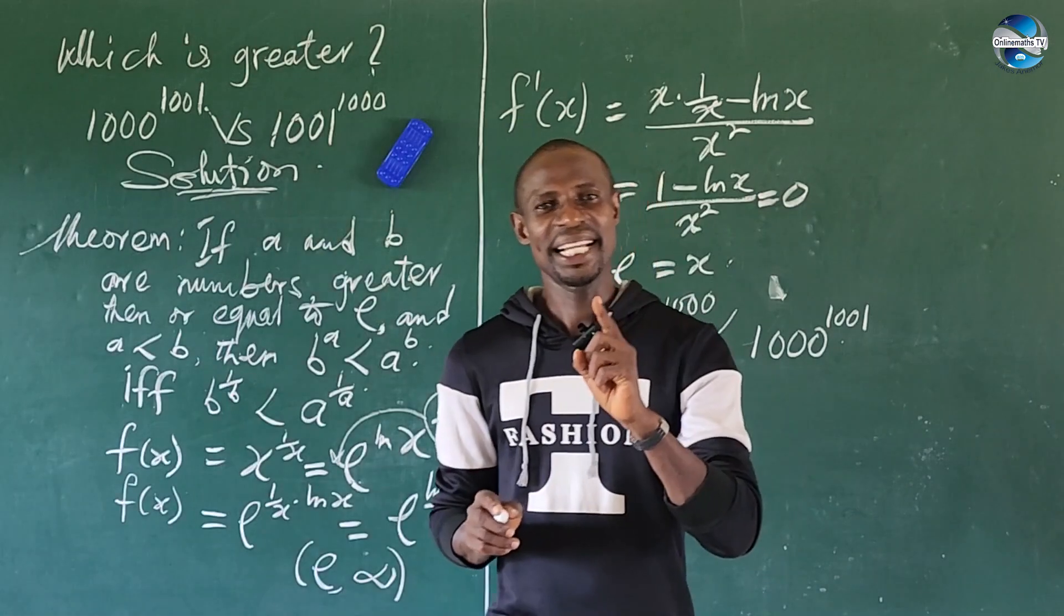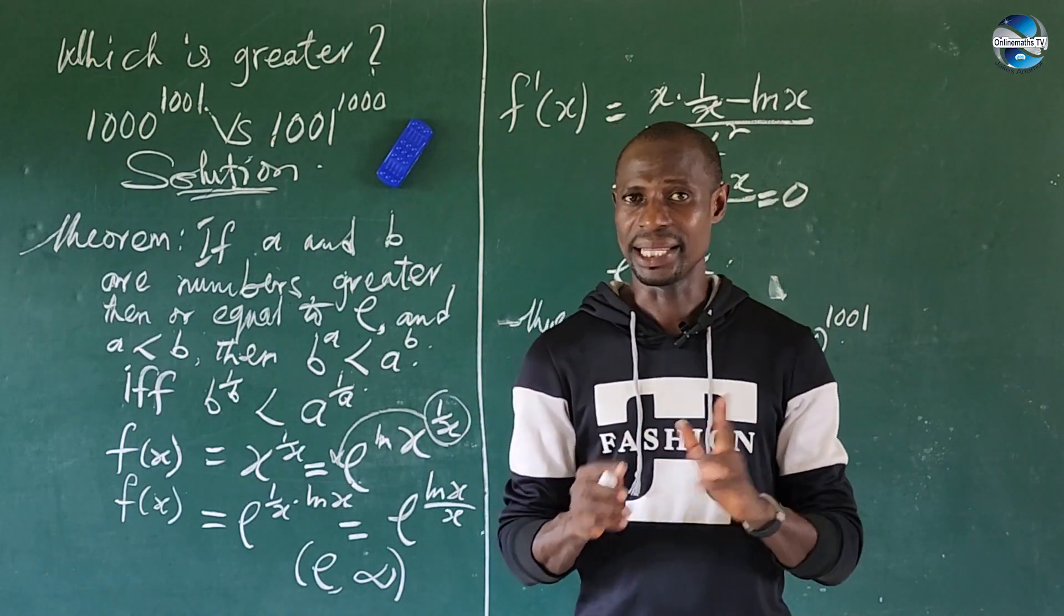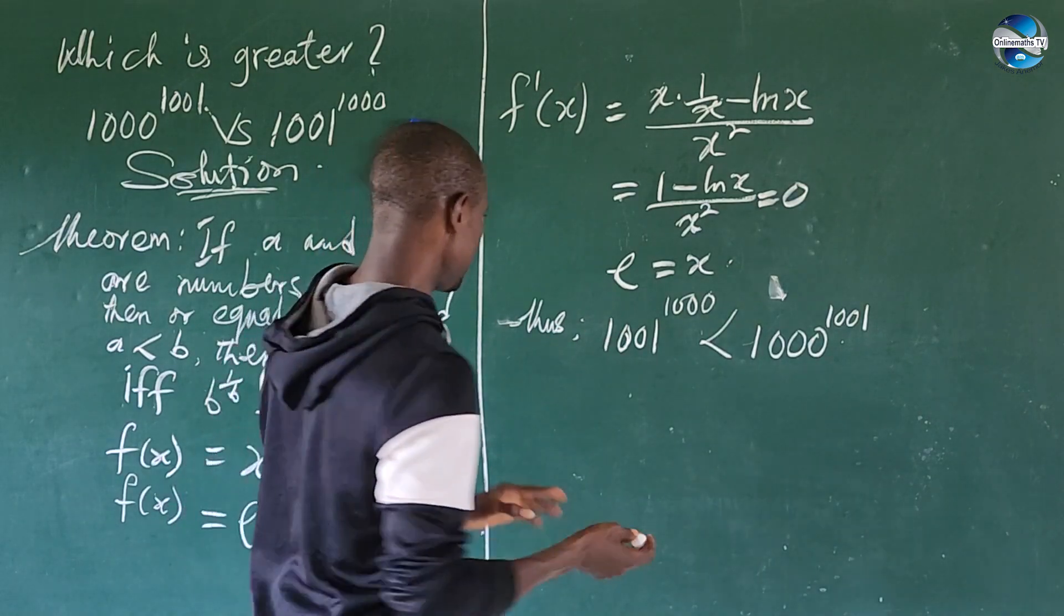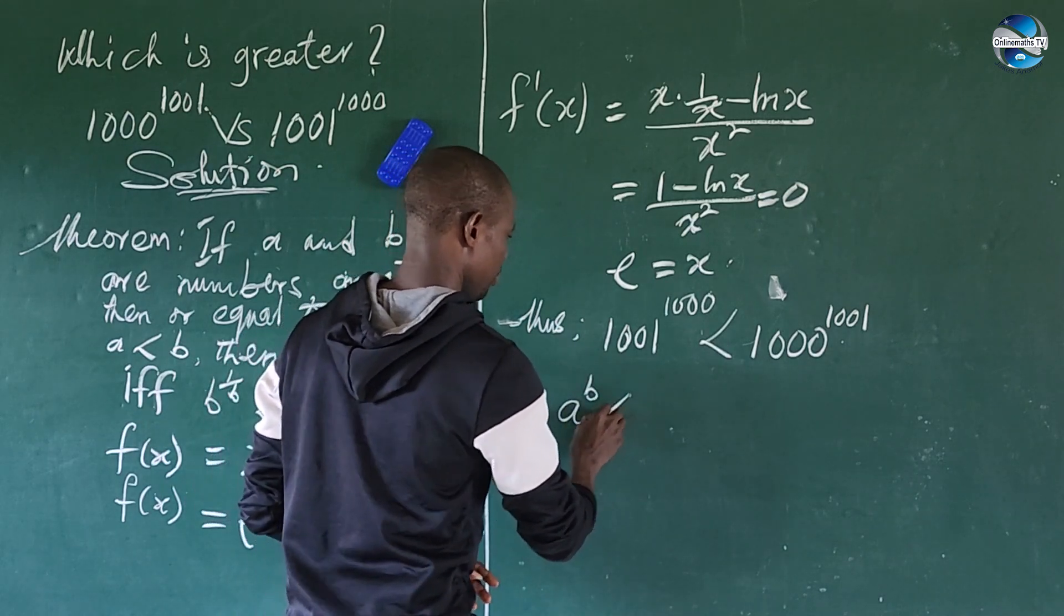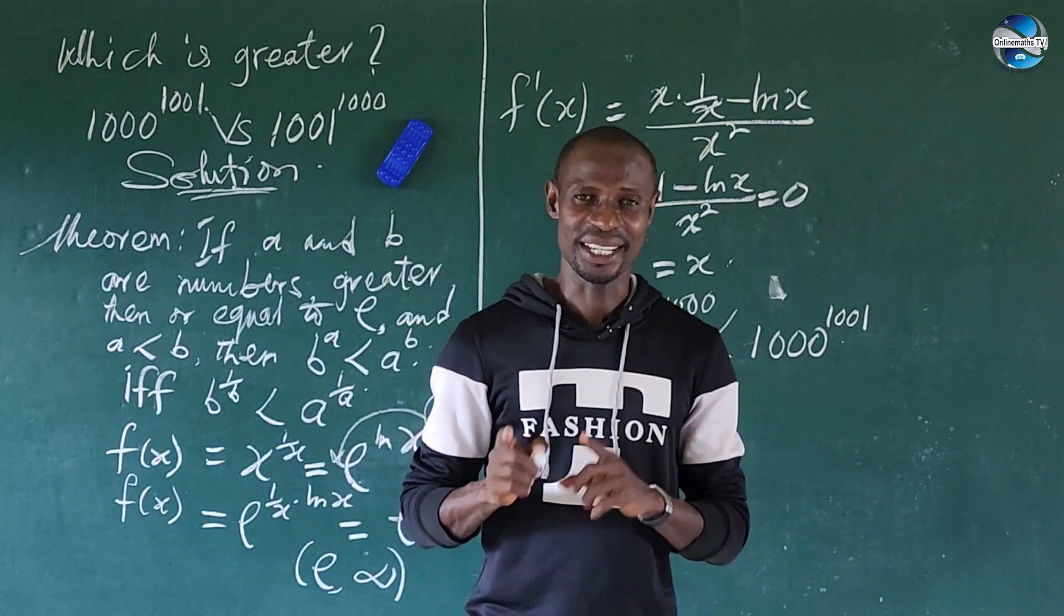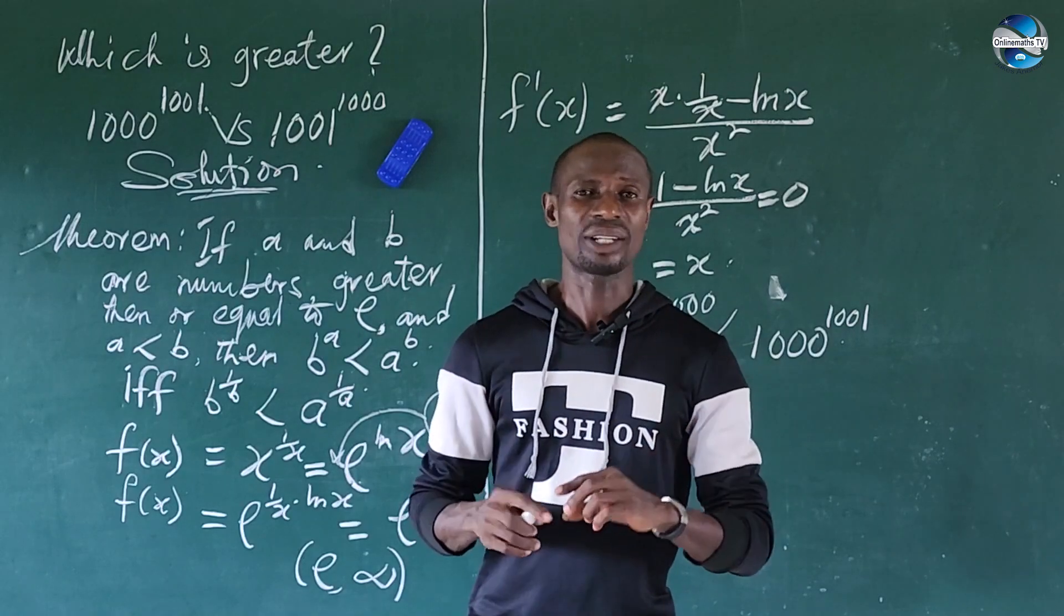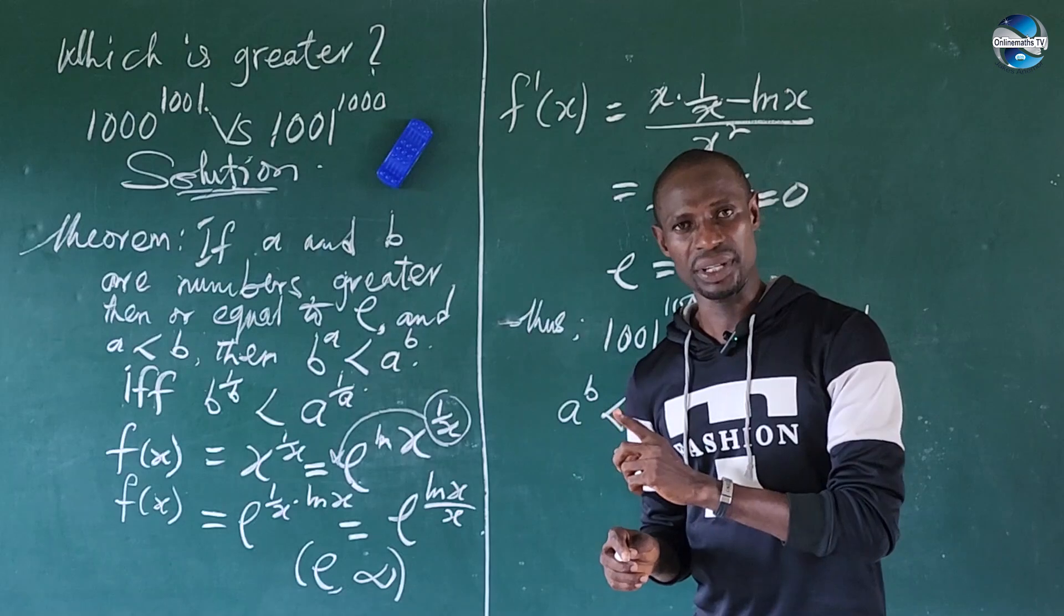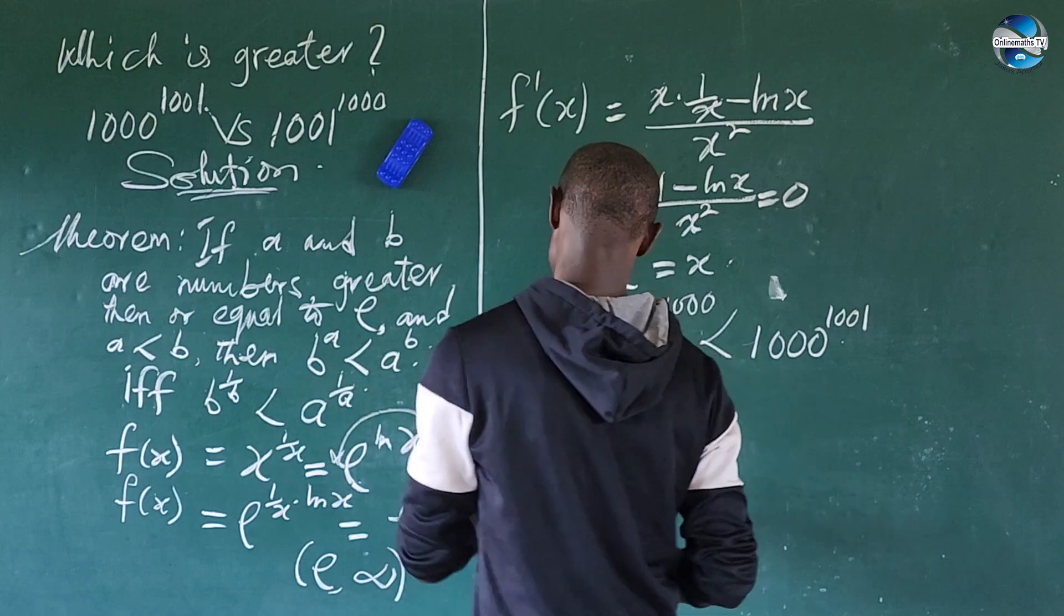But again, we have to note this, that if we have two numbers A and B, and they exist between 0 and E, okay, and A is less than B, then from there, we'll go to have it to be that your A to the power of B will be less than B to the power of A. So it will not work the other way around, okay. Although we still have another critical condition in which we cannot actually tell whether A to the power of B is less than B to the power of A, or B to the power of A is less than A to the power of B. So what is that situation?